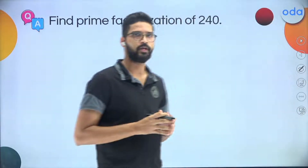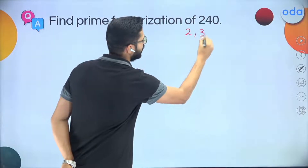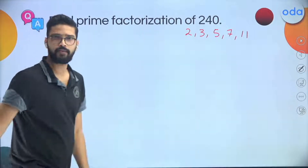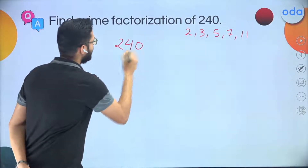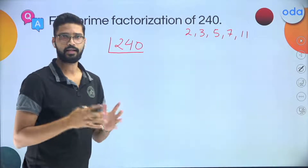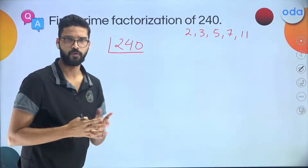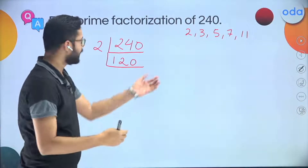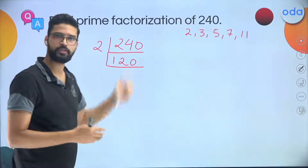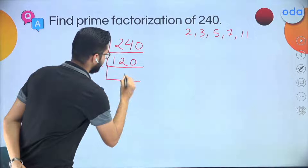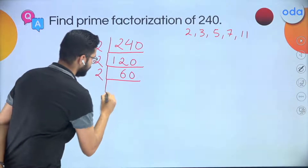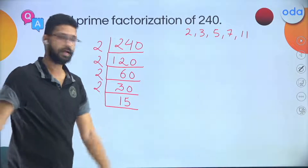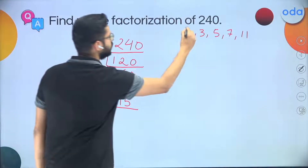First, write down the prime numbers known to us: 2, 3, 5, 7, 11. Now for 240, start dividing by the smallest prime number — 2. 240 divided by 2 is 120. Keep dividing by 2: 120 gives 60, then 60 gives 30. Is 30 divisible by 2? Yes — 15 times.